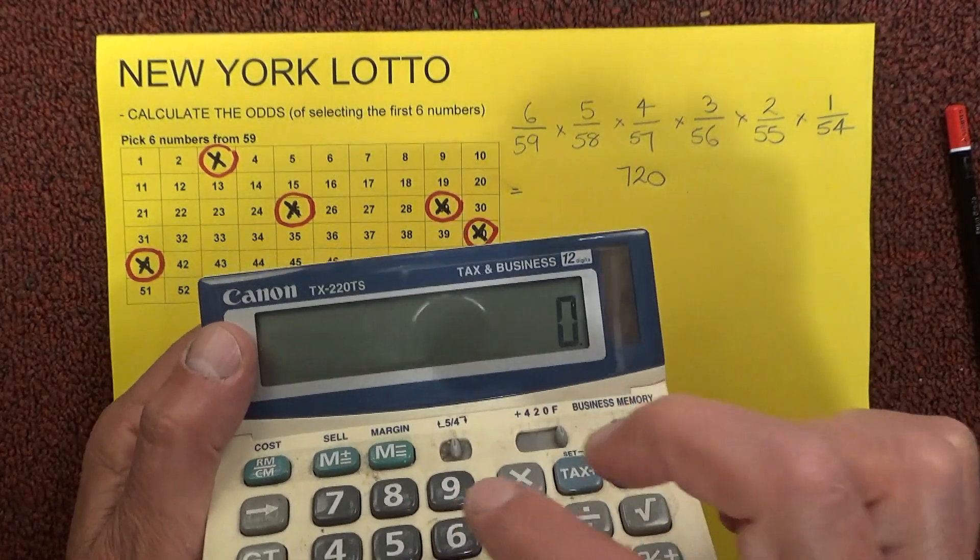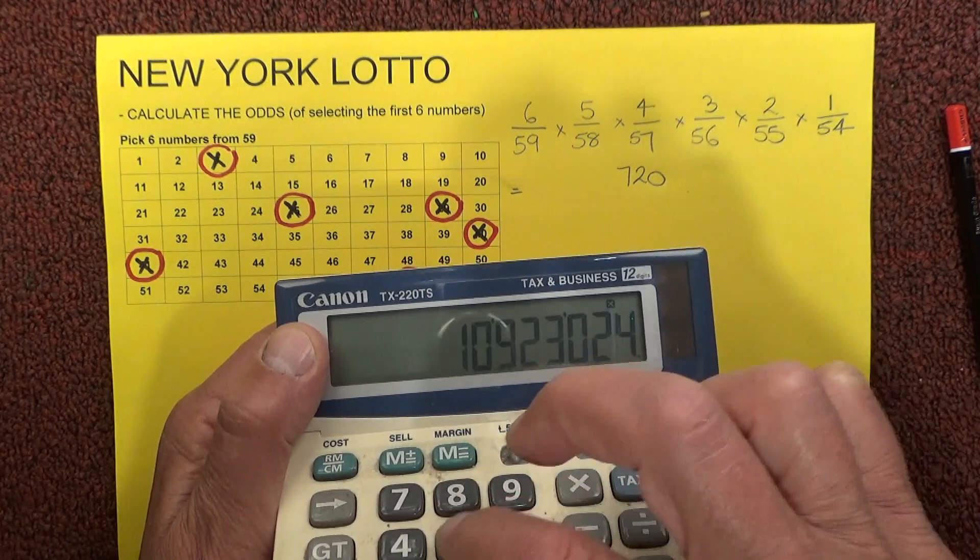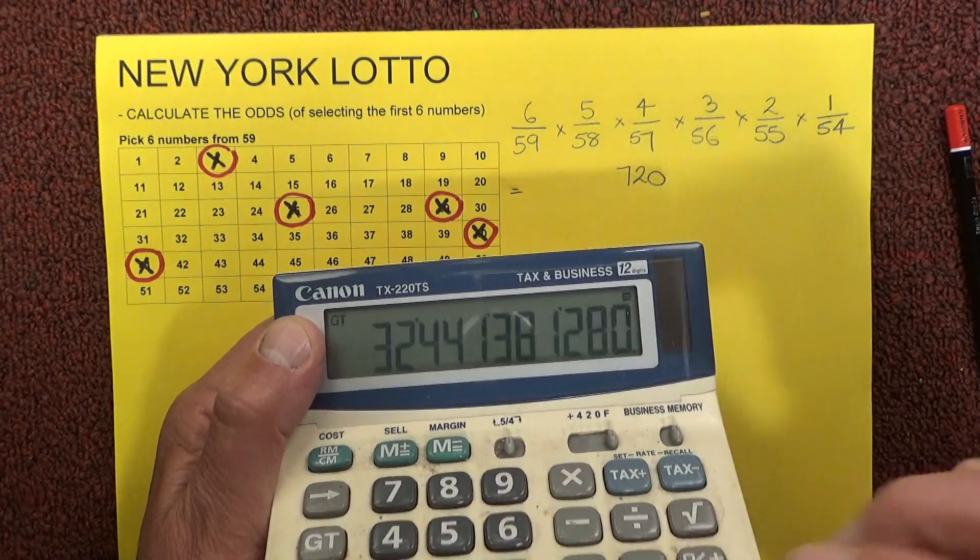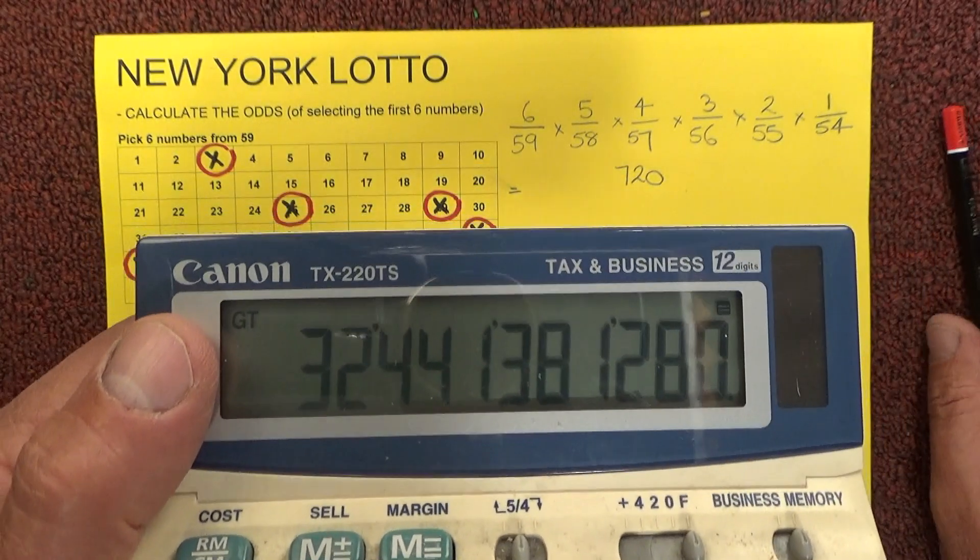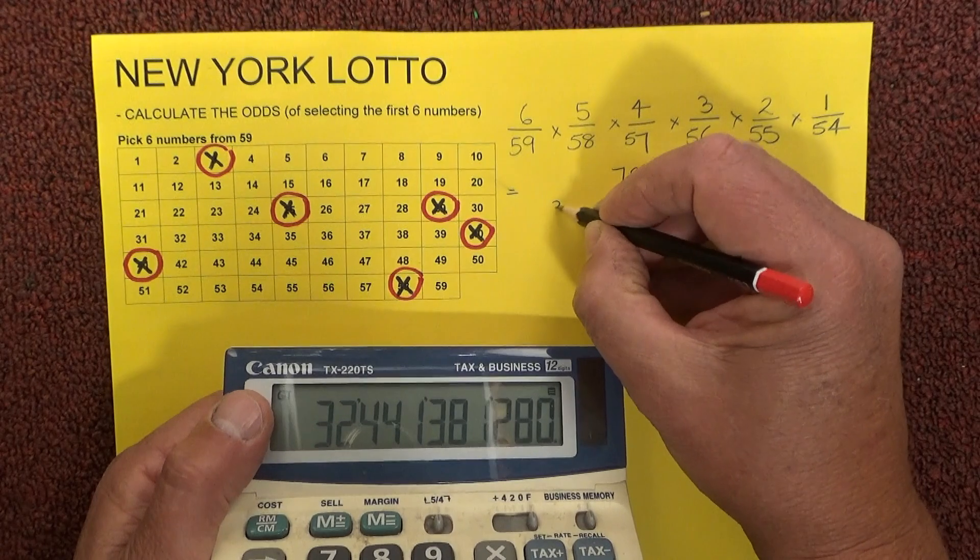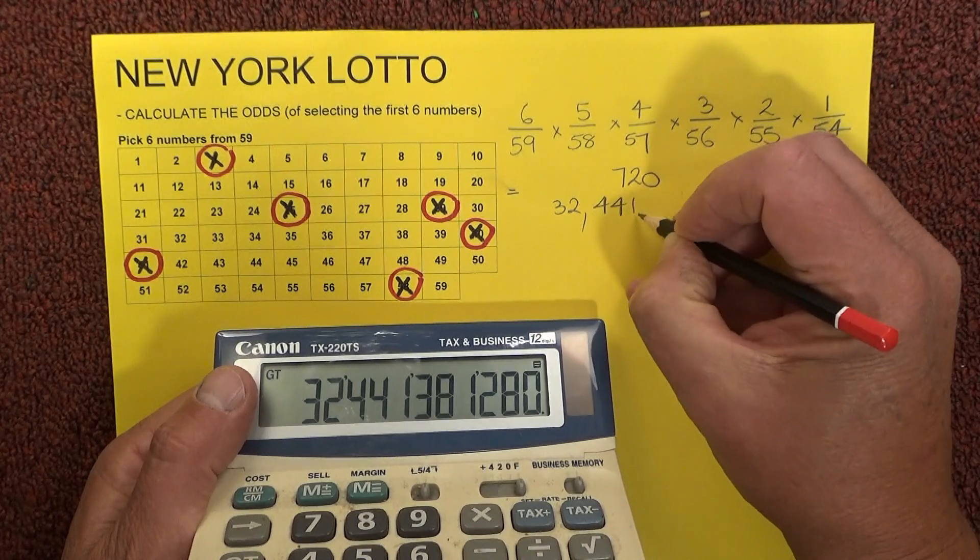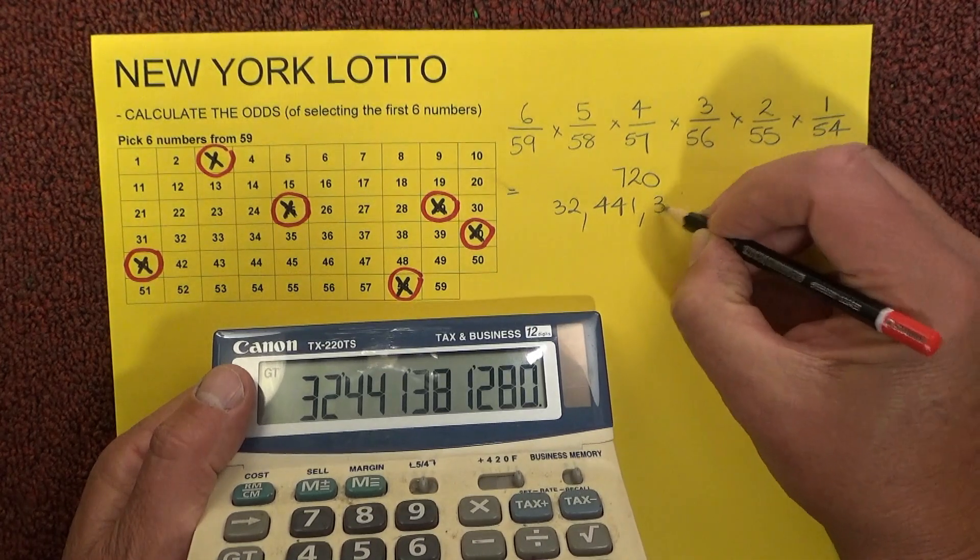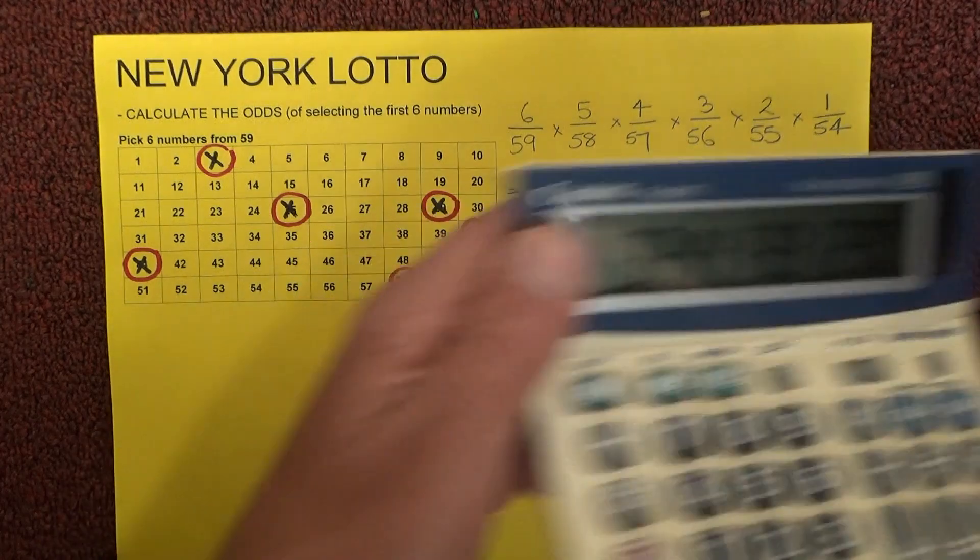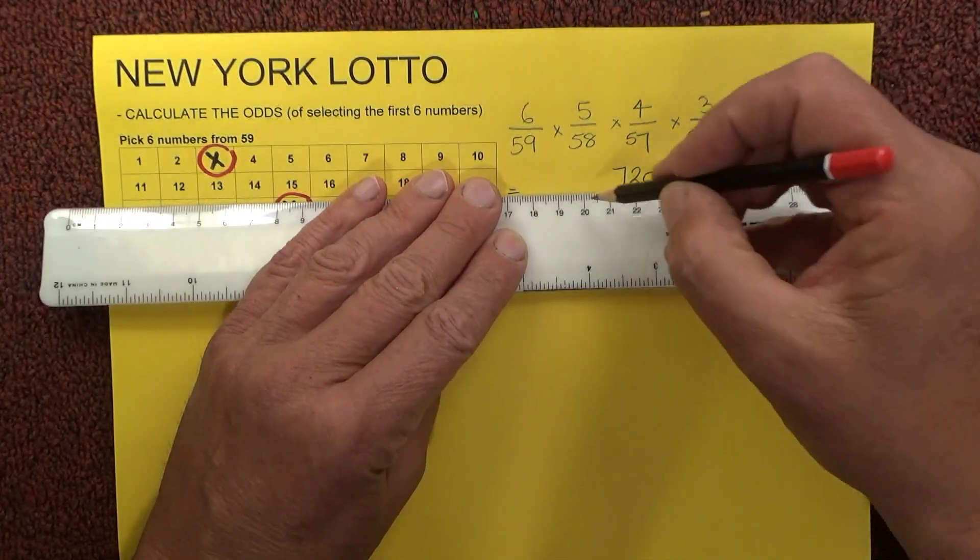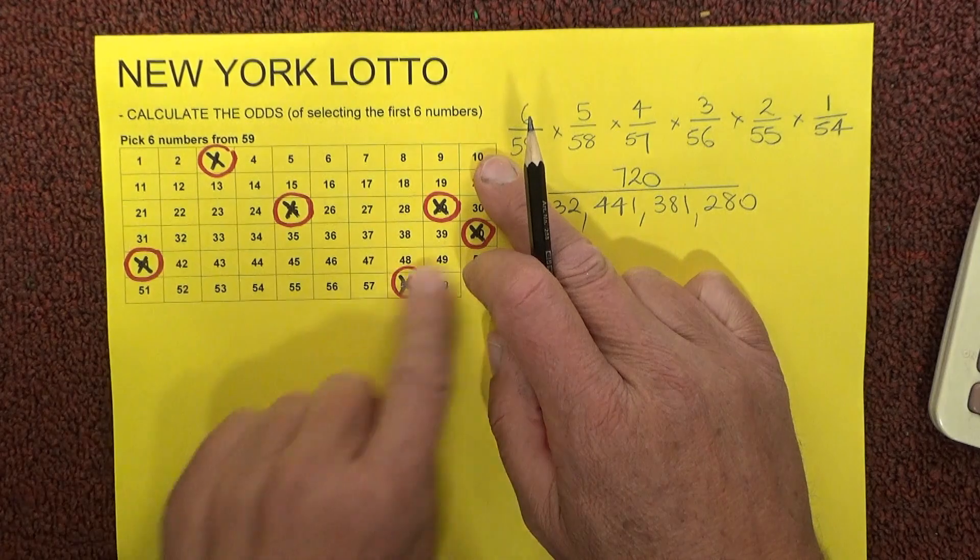And then multiply out the bottom row: 59 times 58 times 57 times 56 times 55 times 54 equals this astronomical number of 32 billion. I'll write that down: 32 billion, 441,381,280.